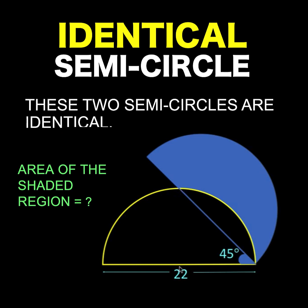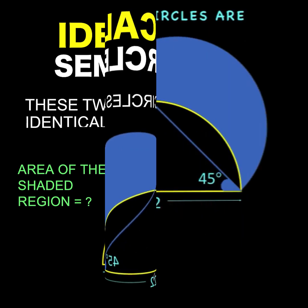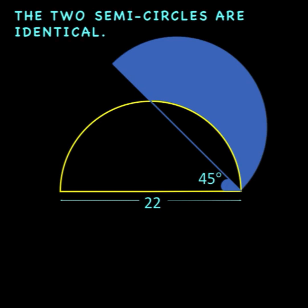Hi everyone, here is our math problem for today. We are given here two identical semicircles.